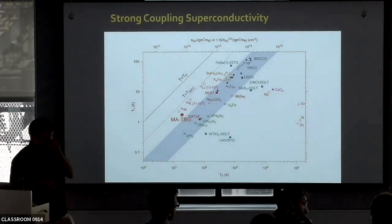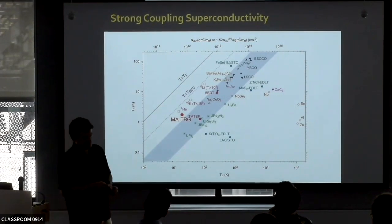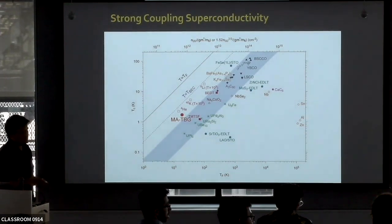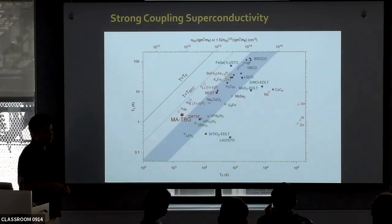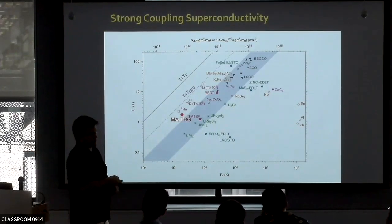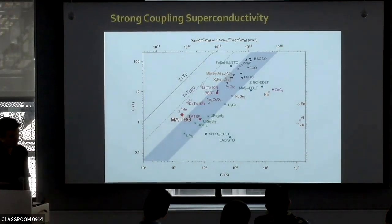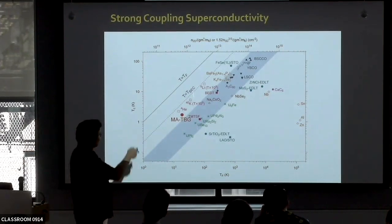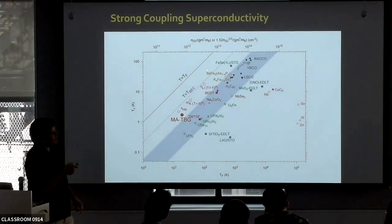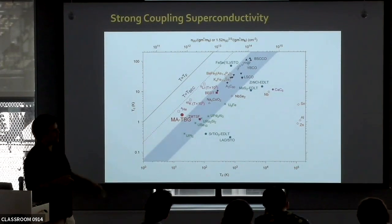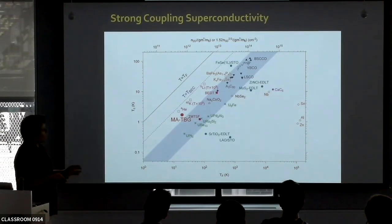The only other system similarly positioned is monolayer iron selenide on STO, though there's a lot of debate about where the Fermi temperature is in that multiband system. The Fermi temperature axis is just TF = (ħ²/2m*) × square root of density in two dimensions — it's directly a conversion from density. All data points in the Uemura plot are extracted the same way, so it's a fair comparison.